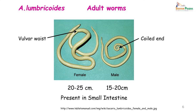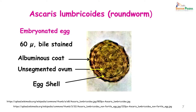These adult worms are found in the small intestine. The eggs of Ascaris lumbricoides are about 40 to 60 microns in size. They are bile-stained, which means they acquire a yellowish-brownish color when you look at them in a wet film. They have an outer albuminous coat, within which is the egg shell, and right in the center is the ovum which may be unsegmented.